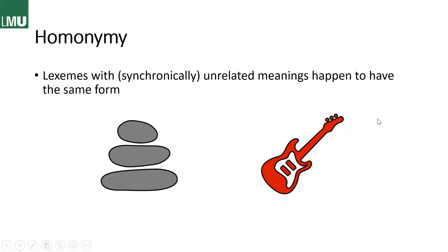Whereas in homonymy, the lexemes look and sound the same but there is no related meaning — at least synchronically — they just happen to have the same form. For example, 'rock' as in rock music doesn't have anything to do with the rock you find in the mountains.